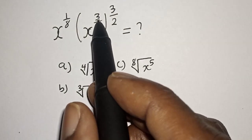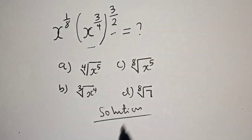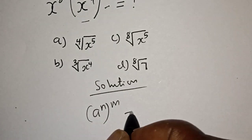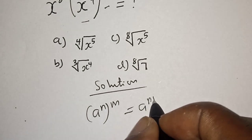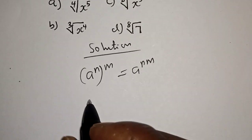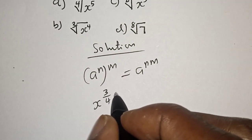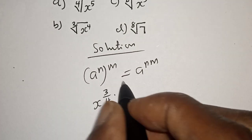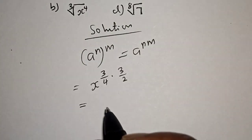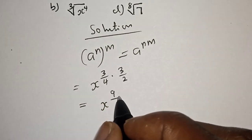We have s raised to power 3 over 4 in the bracket and to the power of 3 over 2. Let's work with this. Remember this rule: a raised to power m, to the power of n, is equal to a raised to power n times m. So s raised to power 3 over 4, to the power of 3 over 2, becomes s raised to power 3 over 4 multiplied by 3 over 2. This is equal to s raised to power 9 over 8, since 3 times 3 is 9 and 4 times 2 is 8.